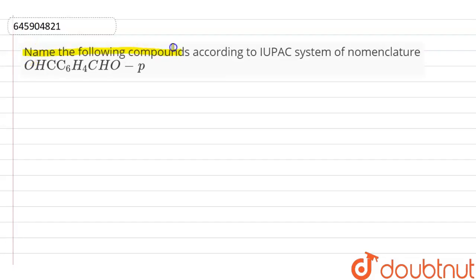Name the following compounds according to IUPAC system of nomenclature, and that is OHC-C6H4-CH2 and that is para. Now our given compound is OHC-C6H4-CH2 and that is para. Now firstly we draw a structure and that is...